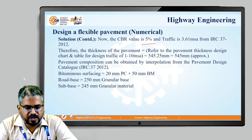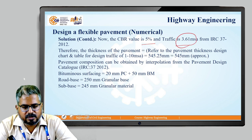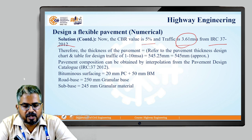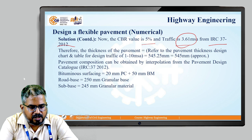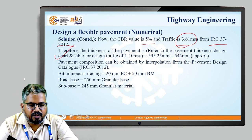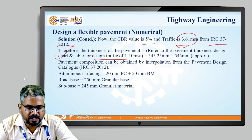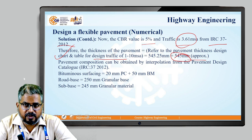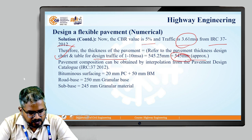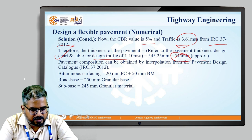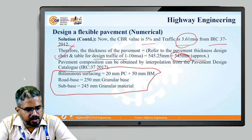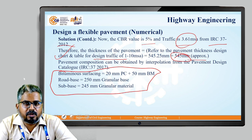With CBR = 5% and traffic = 3.61 MSA, using IRC 37:2012 and performing interpolation for design traffic in the 1–10 MSA range, the total thickness of the pavement is approximately 545 mm. The layer-wise breakdown obtained is: bituminous surfacing = 20 mm PC plus 50 mm BM, road base = 250 mm granular base, and sub-base = 245 mm granular material.